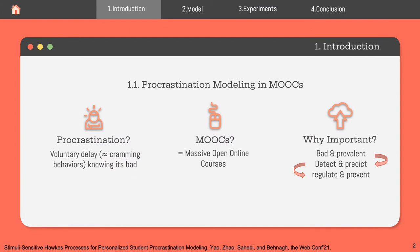Before formally introducing our paper, we want to go over some definitions first. Procrastination usually means a voluntary delay, especially knowing that the consequences could be harmful. A common representation of procrastination is cramming behaviors. In this paper, we are interested in procrastination modeling in MOOCs — massive open online courses — because it could be very prevalent and the consequences very harmful. We want to detect and predict procrastination in order to further regulate and prevent it in the future.